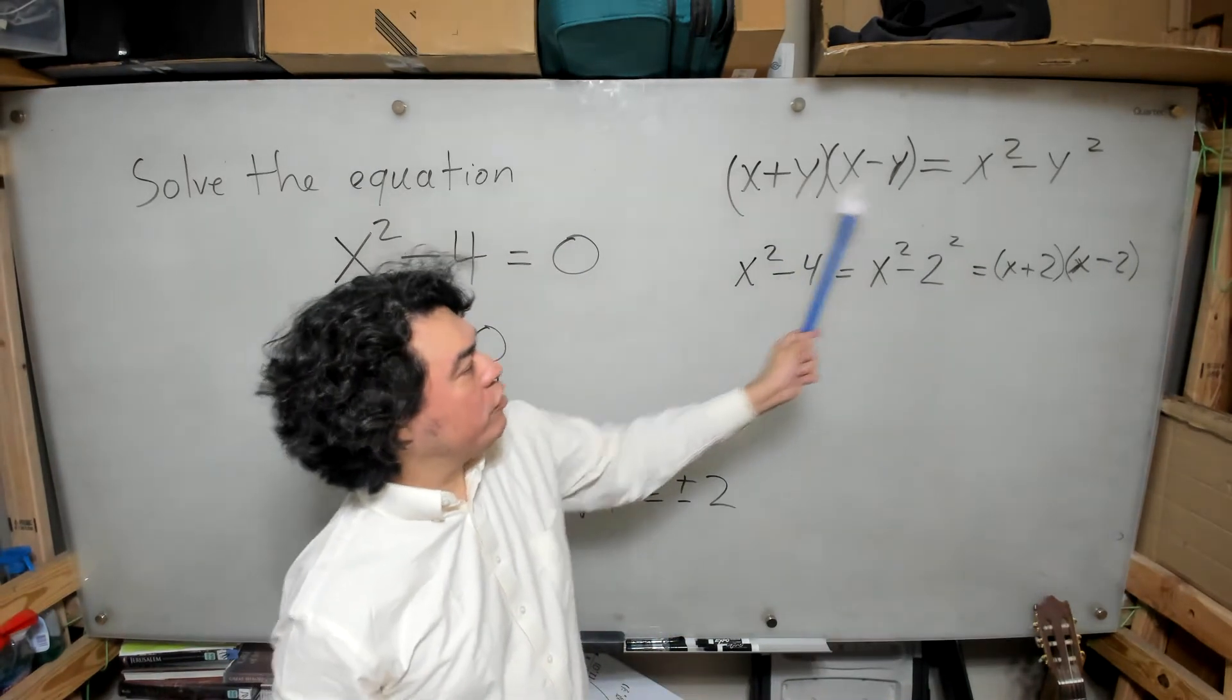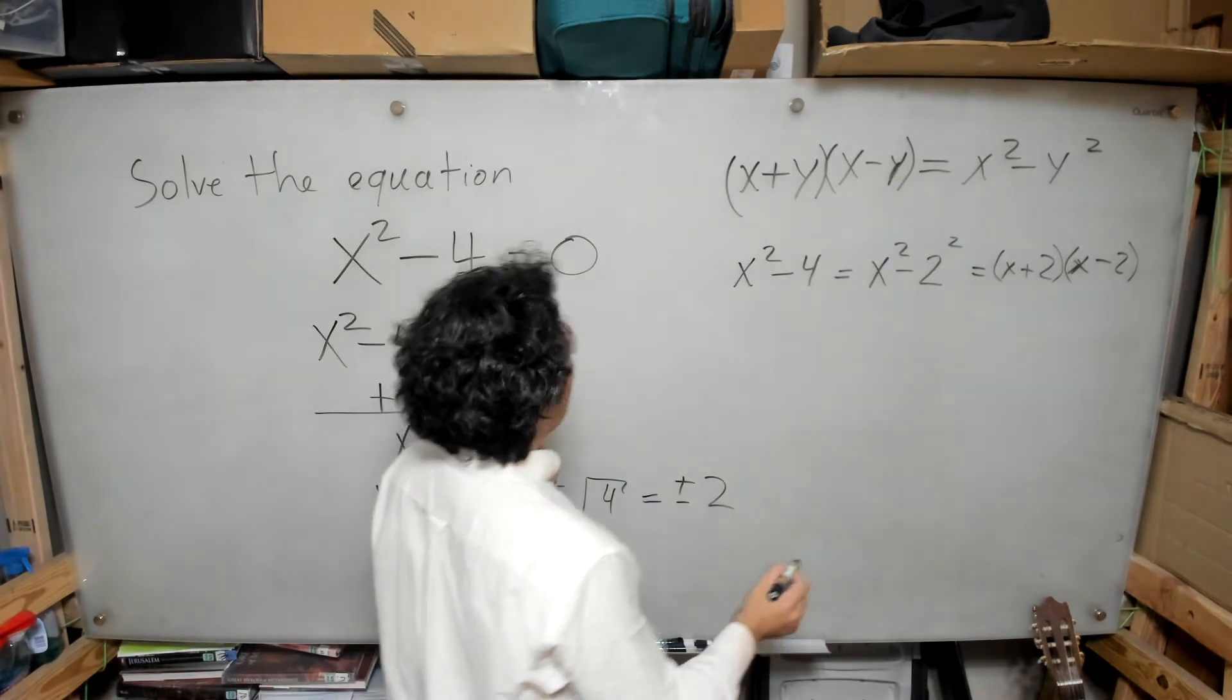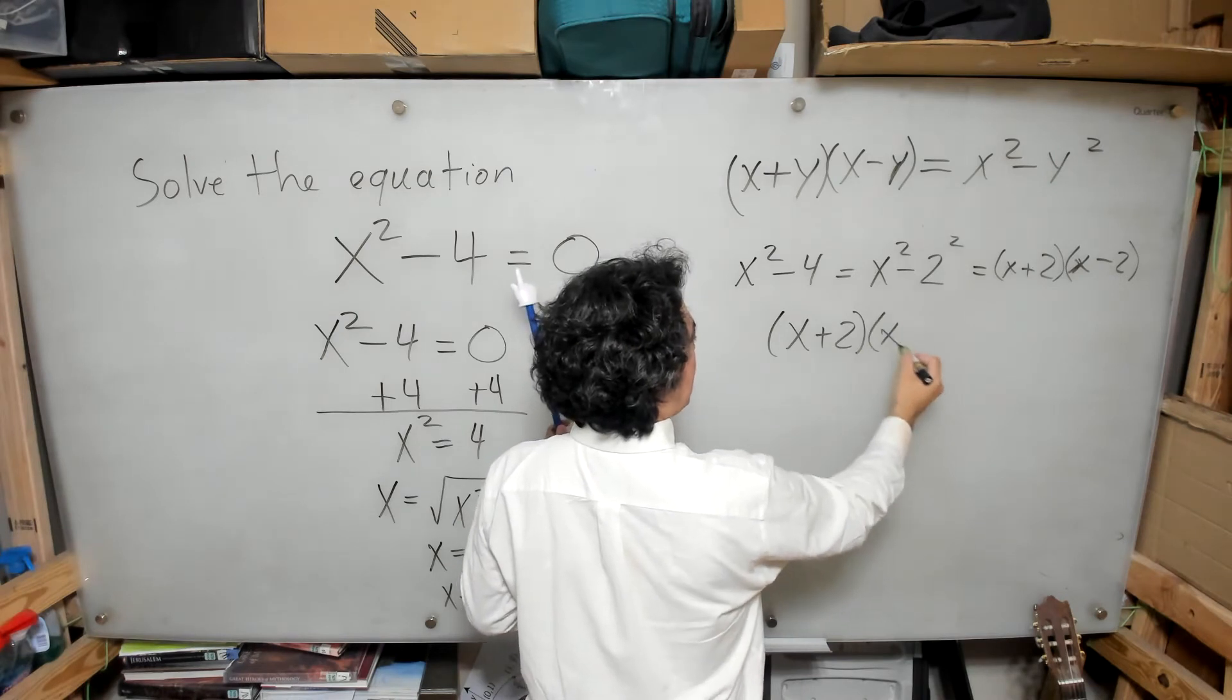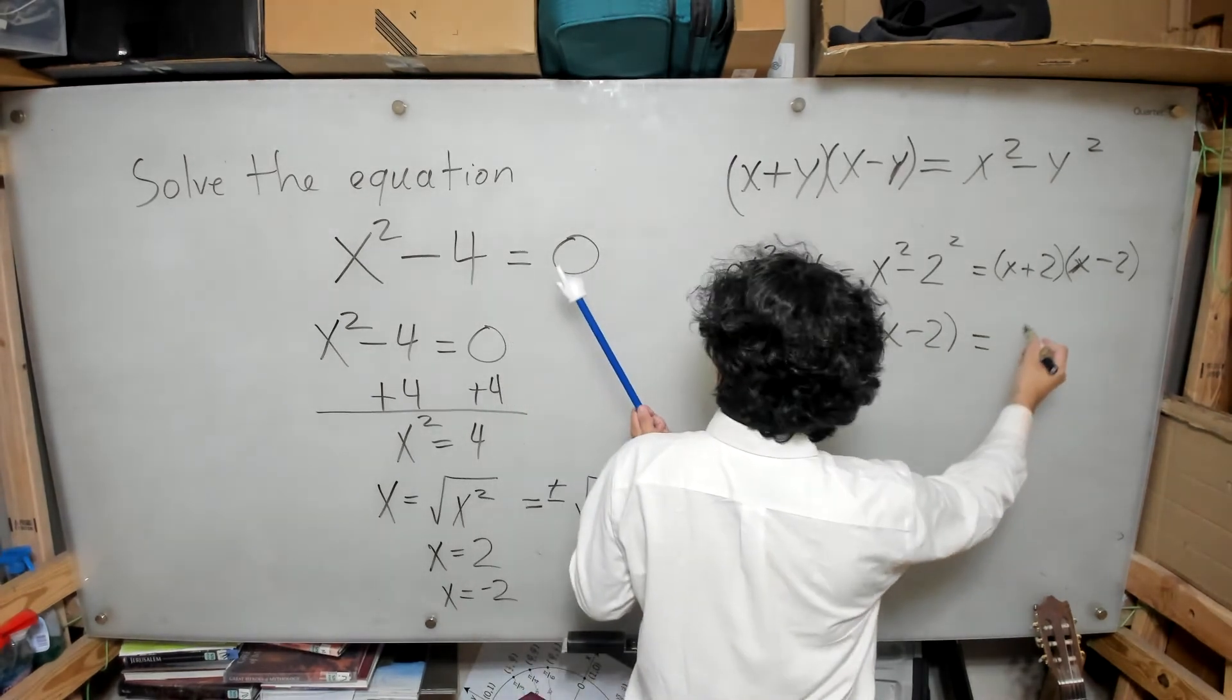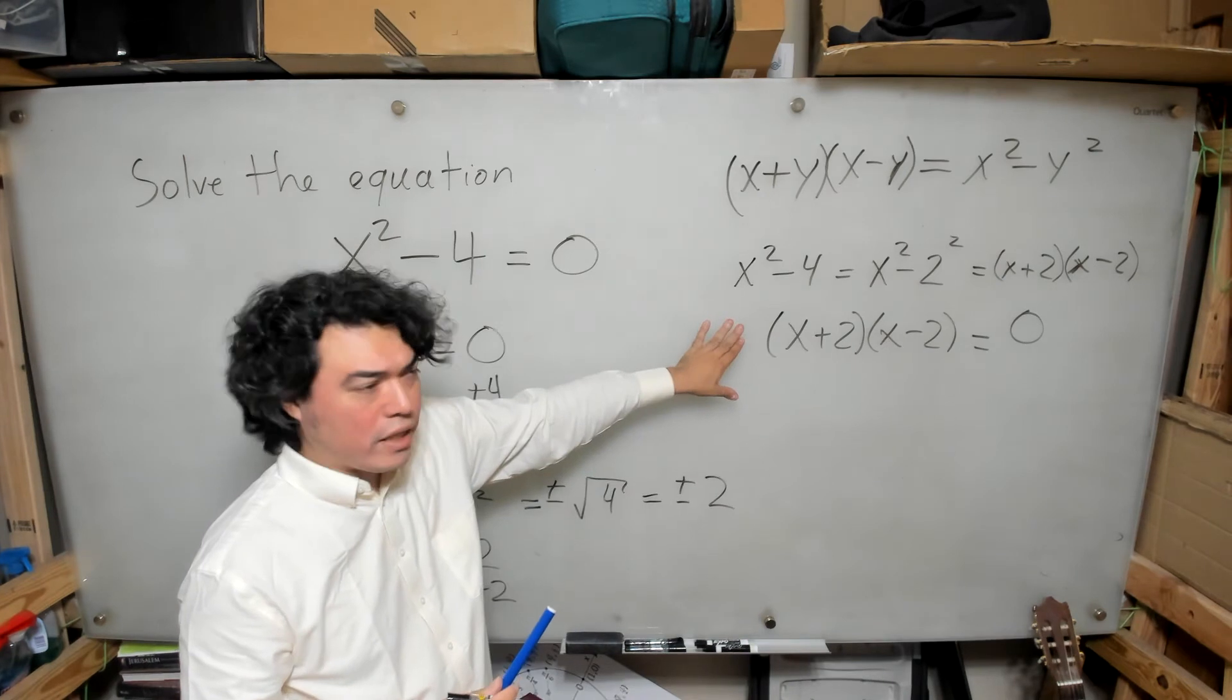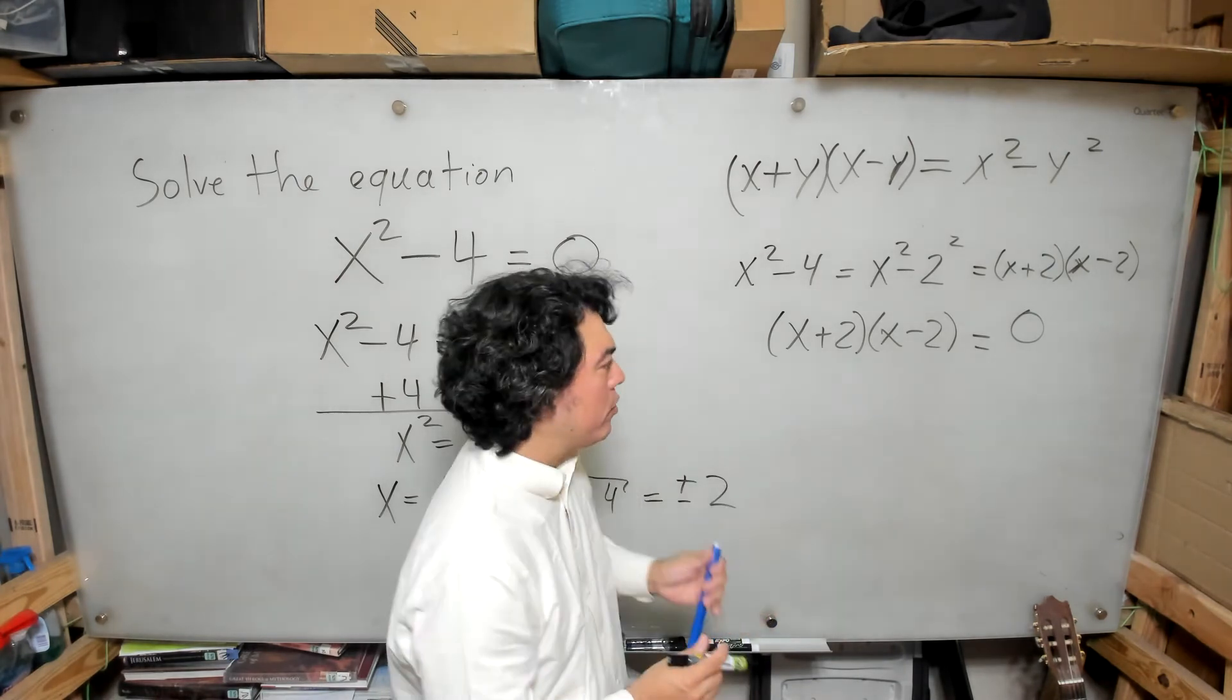So because of this formula, I know that x squared minus 4 factors as x plus 2 times x minus 2, and therefore, I can rewrite this equation as x plus 2 times x minus 2 equals 0. And then we recall from last time, once we have an equation in factored form like this, we use the 0 product property. We set this term equal to 0 and this term equal to 0.